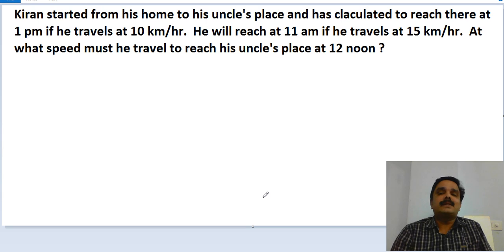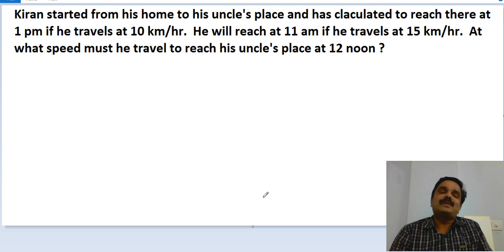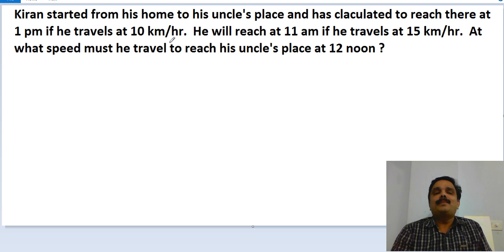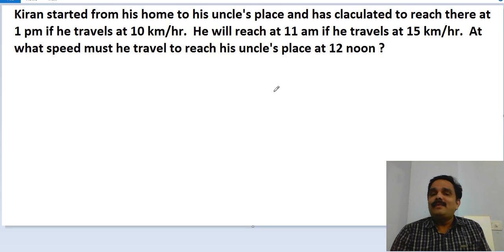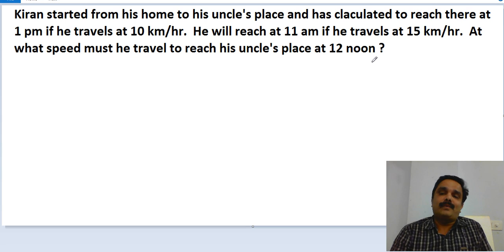Now in this video, just see the question on the screen. This is one of the very important questions for you to go to the further level in time and distance. Read the question properly and try to understand it first. One person — Kiran — started from his home to his uncle's place and has calculated to reach there at 1 p.m. if he travels at 10 kilometers per hour. Then he will reach at 11 a.m. — two hours earlier — if he travels at 15 kilometers per hour. The question is: at what speed must he travel to reach his uncle's place at 12 noon?